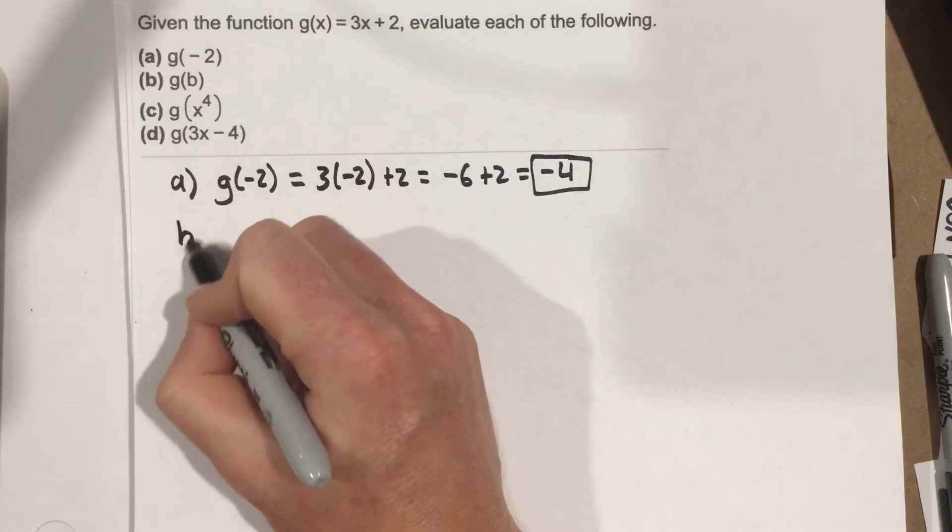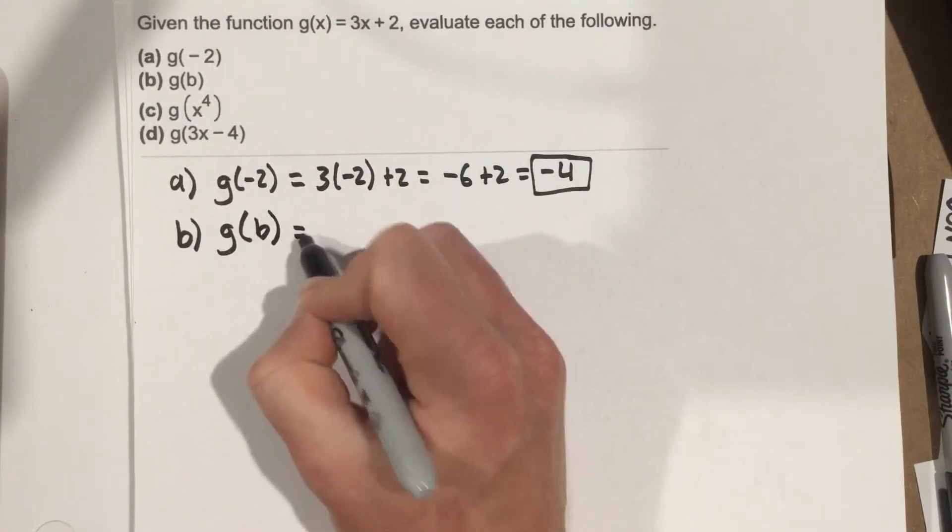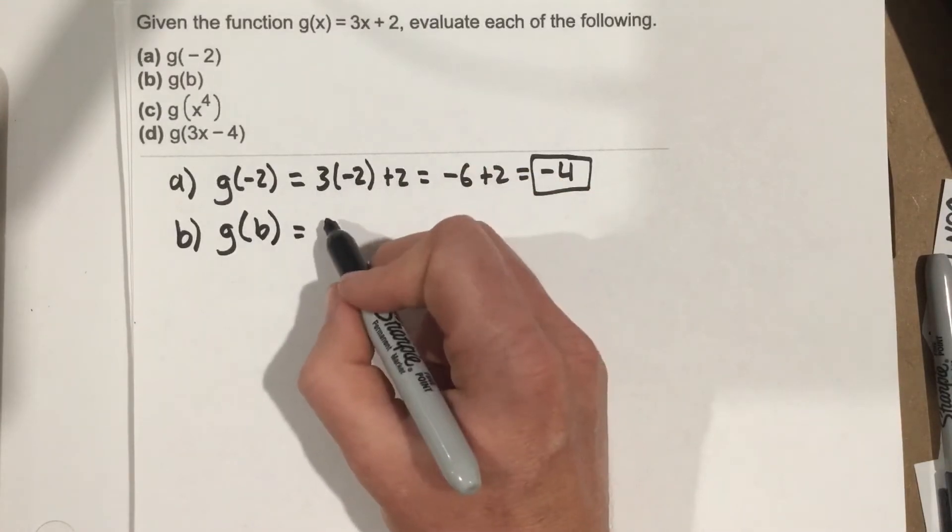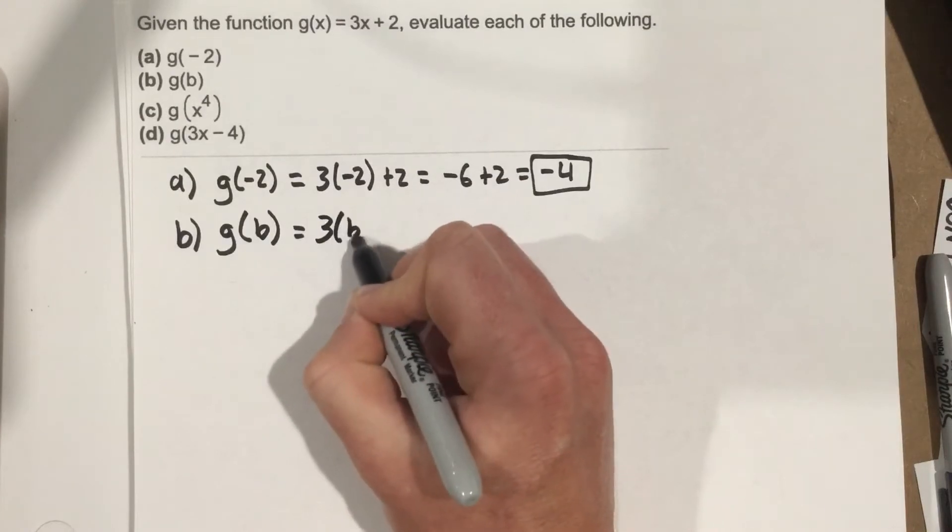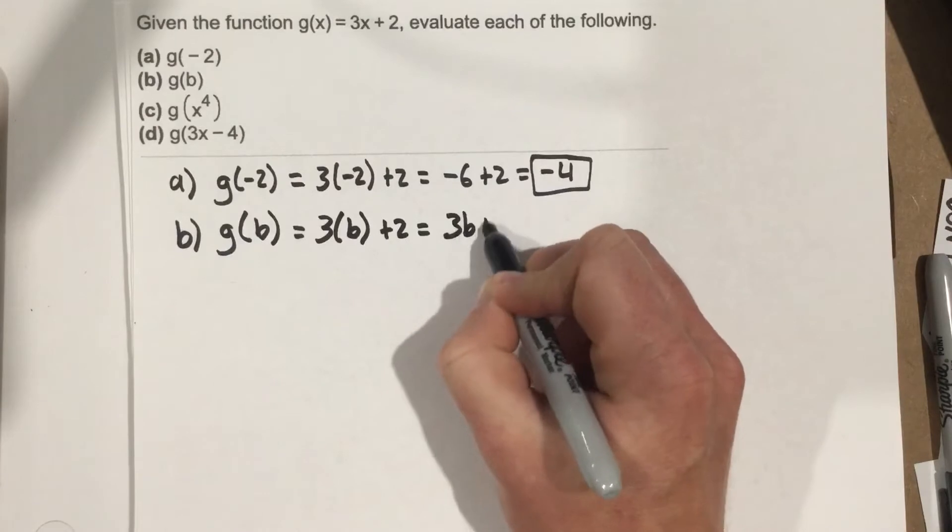Part B. They want us to evaluate g of b. All they're doing here is changing the variable, changing our input value. So we're just going to plug b in for x just like we normally would. So it's 3 times b plus 2, which is going to be 3b plus 2.